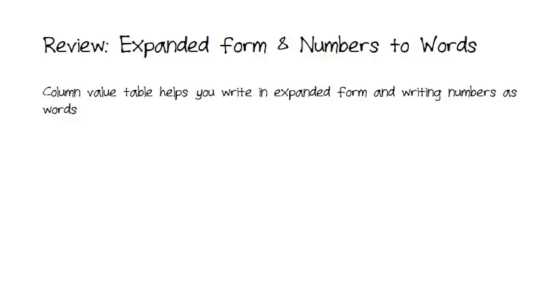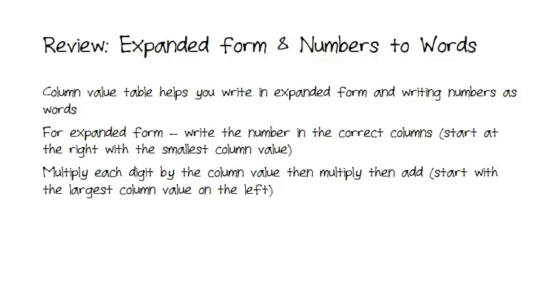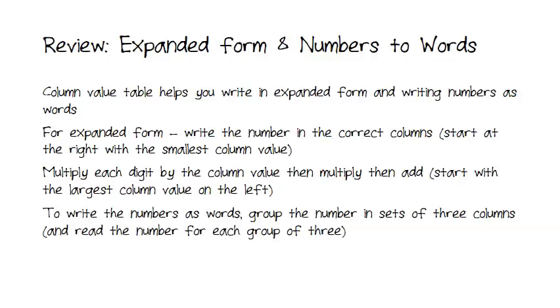So, to review, we can use the decimal place value system to help us write numbers in expanded form and to convert numbers to words. Always write out the column value table first. And for expanded form, we write the number into the correct columns, starting from the right with the smallest column value, the digit in the ones column. Then multiply each digit by the column value, and then add.